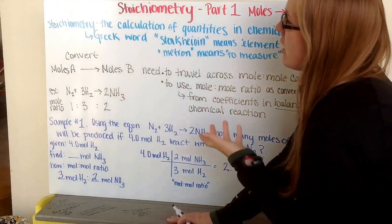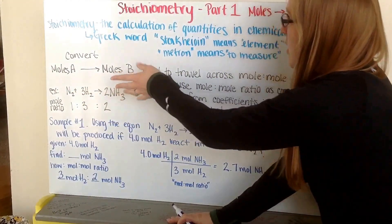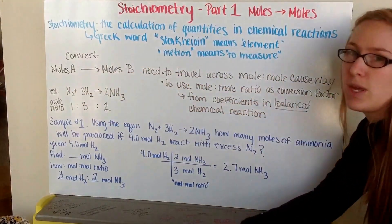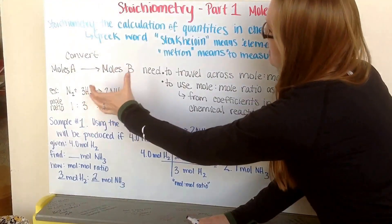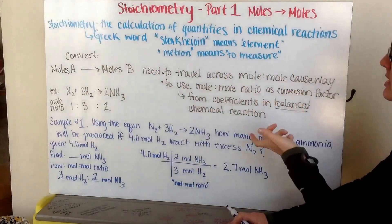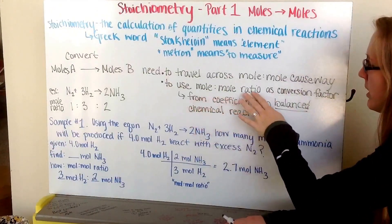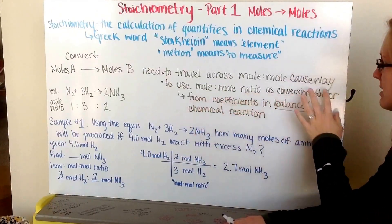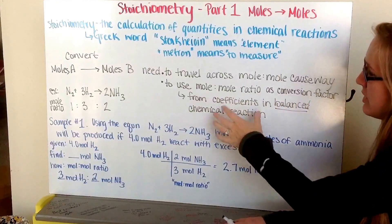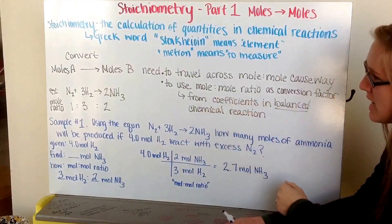To convert from moles of A to moles of B, we need to travel across our mole-to-mole causeway — going from moles of one substance across the bridge to moles of another substance. To do that, we have to use our mole-to-mole ratio as a conversion factor, which we get from the coefficients in a balanced chemical reaction.